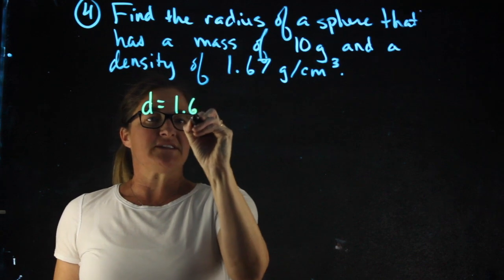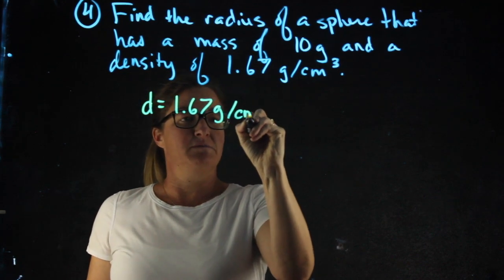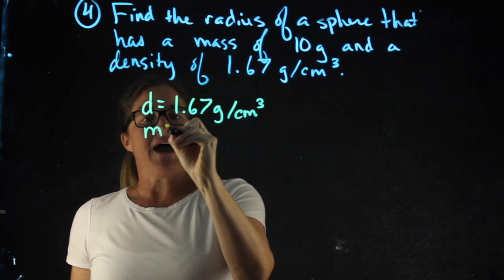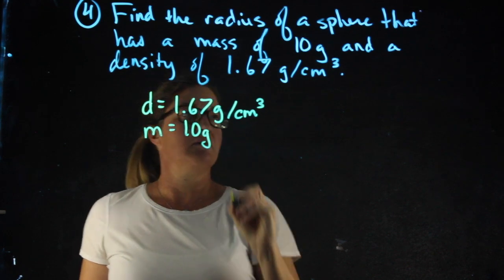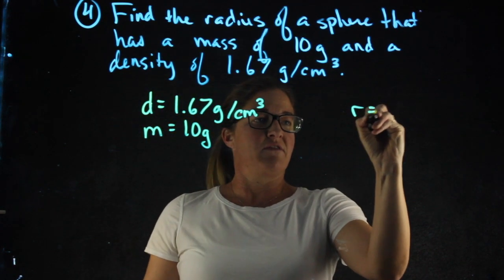Density, 1.67 grams per centimeter cubed. We know the mass to be 10 grams. I want the radius.